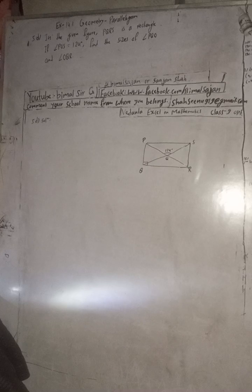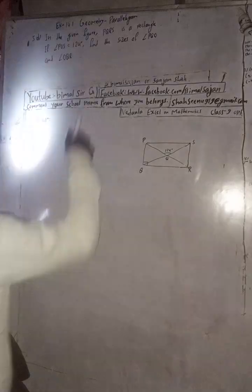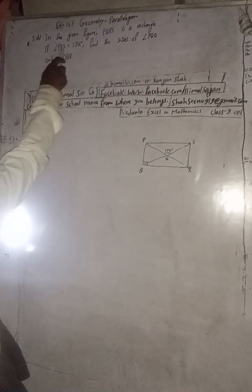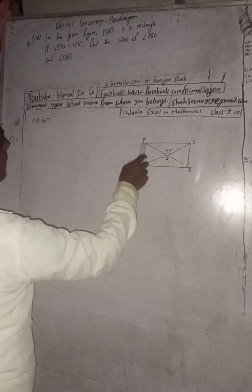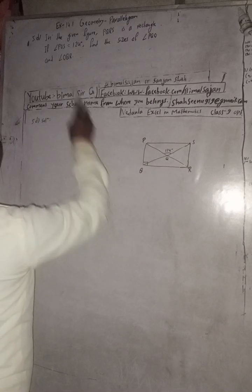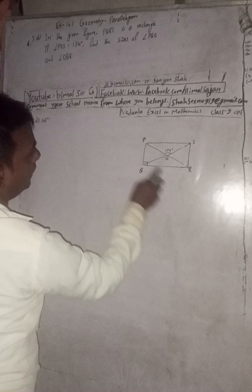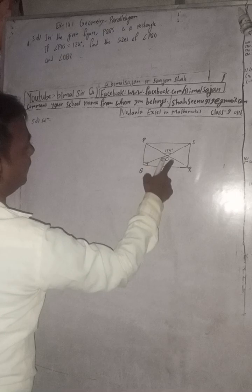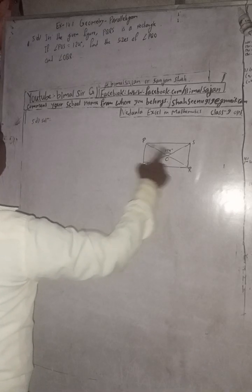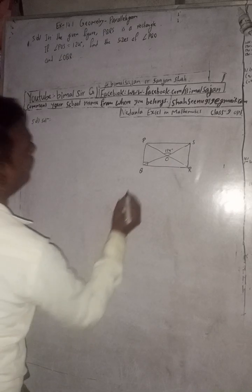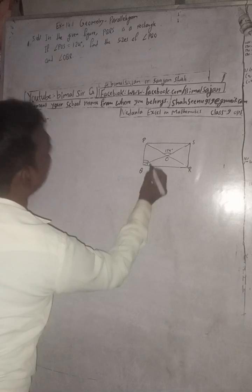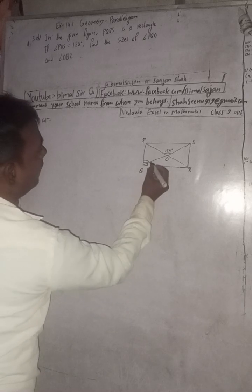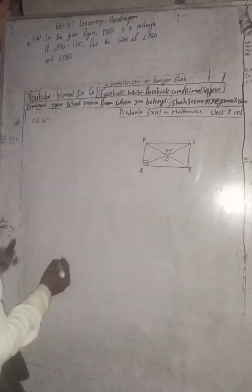Let's start the solution. In the given figure, PQRS is a rectangle. Angle POS is 124 degrees. We have to find the size of angle PQO and angle OQR.